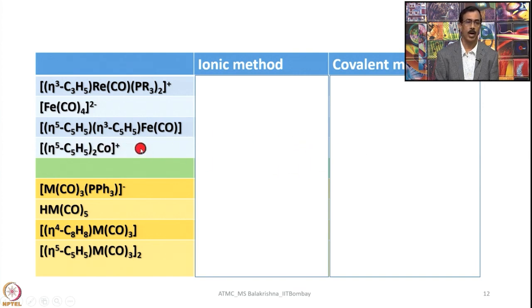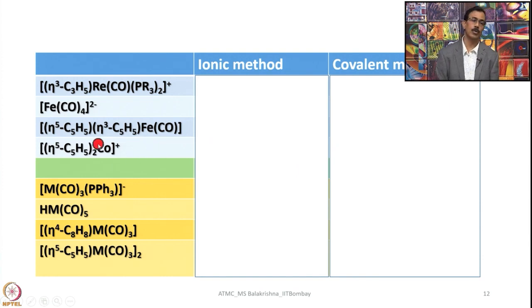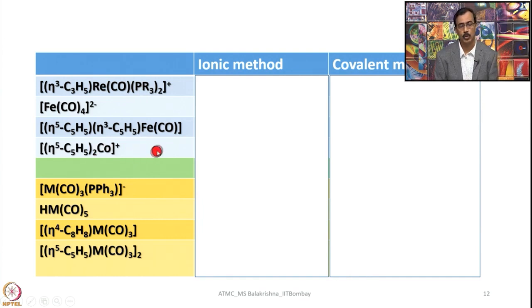For the cationic cobaltocene complex: Co gives 9 electrons, two Cp rings give 5 each (total 10), plus 12 from further ligands, then subtract 1 for the +1 charge, giving 18 electrons. This explains why cobaltocene itself is unstable but cobaltocenium cation is stable — the 18-electron count predicts relative stability.